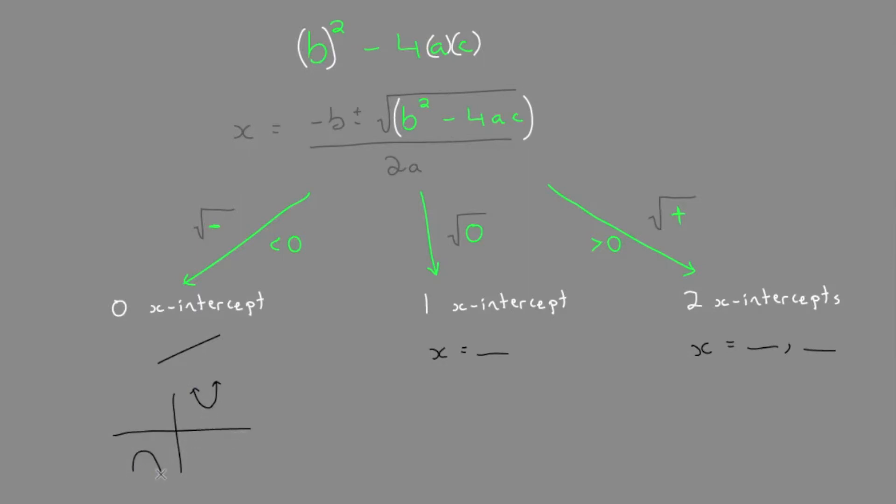And there would be no x-intercepts. So the parabola could really be anywhere above or below the x-axis. You can see there are no x-intercepts.